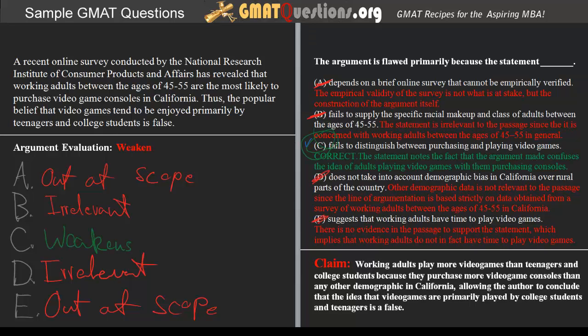So we can say that C correctly weakens the line of argumentation being made in the passage, because the statement notes that the argument confuses the idea of adults playing video games with them purchasing consoles. This has been a tutorial from GMATQuestions.org — we hope you found this segment useful, and we encourage you to explore the rest of the features on our website. Thank you for watching.